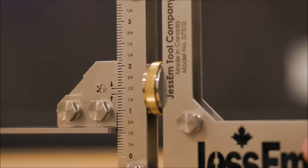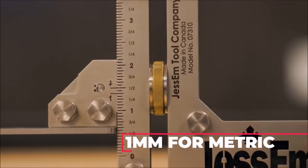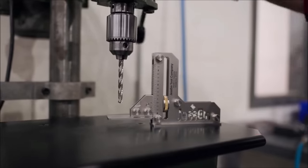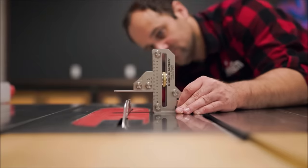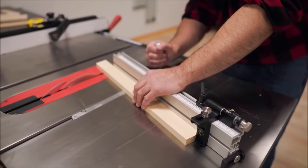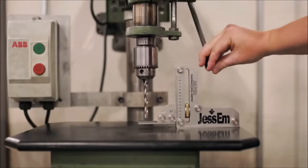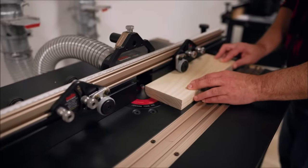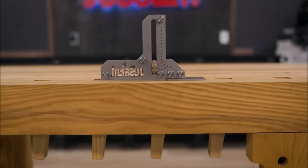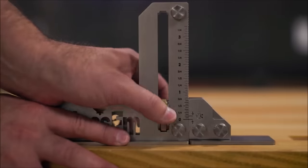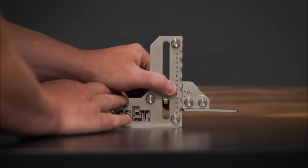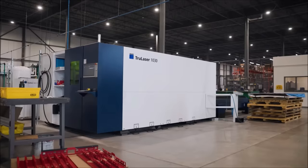This versatile tool finds its place in any workshop, offering the flexibility of use both vertically and horizontally. Whether adjusting the height of your table saw blade, setting router bit depths, configuring drill press depths, or aligning fences on various power tools, the Jessam setting gauge excels in providing quick and precise adjustments.